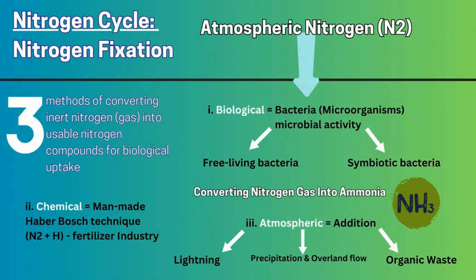That usable product is ammonia, NH3. Alternatively, there is a chemical or man-made addition of nitrogen through the Haber-Bosch technique, where nitrogen gas plus hydrogen at very high temperatures creates a synthetic nitrogen compound usable as fertilizer. This revolutionized the fertilizer industry for agriculture in the early 1900s, as humans realized nitrogen was a key ingredient in plant growth, plant health, and soil fertility.